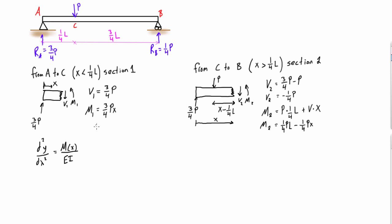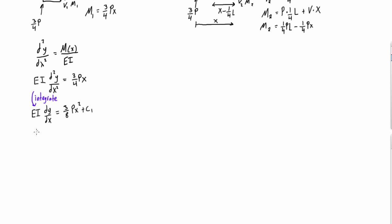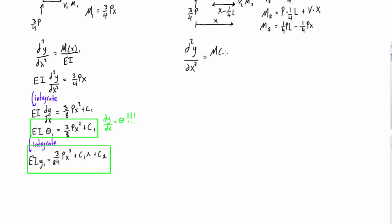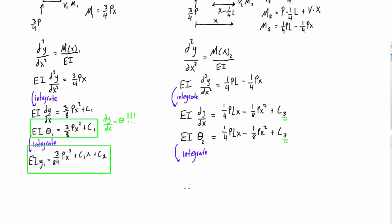So on the left hand side for section 1, when we integrate twice we get the expression for theta and also the expression for y. And then we can do the exact same thing for section 2, and we'll find the expression for theta 2 and y2. And notice in section 2 that we're getting integration constants C3 and C4. So in total we actually have four integration constants: C1, C2, C3, and C4.